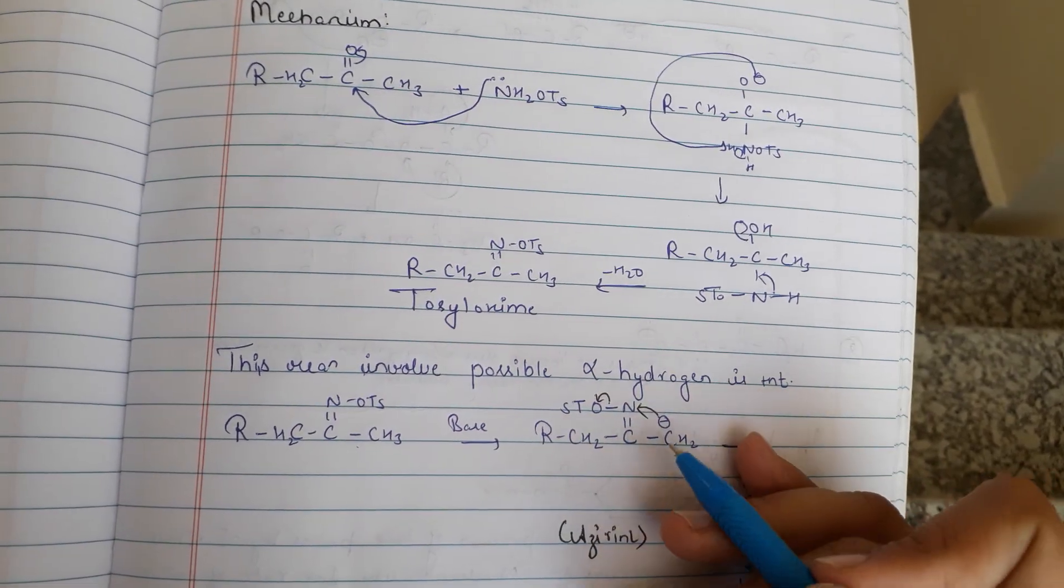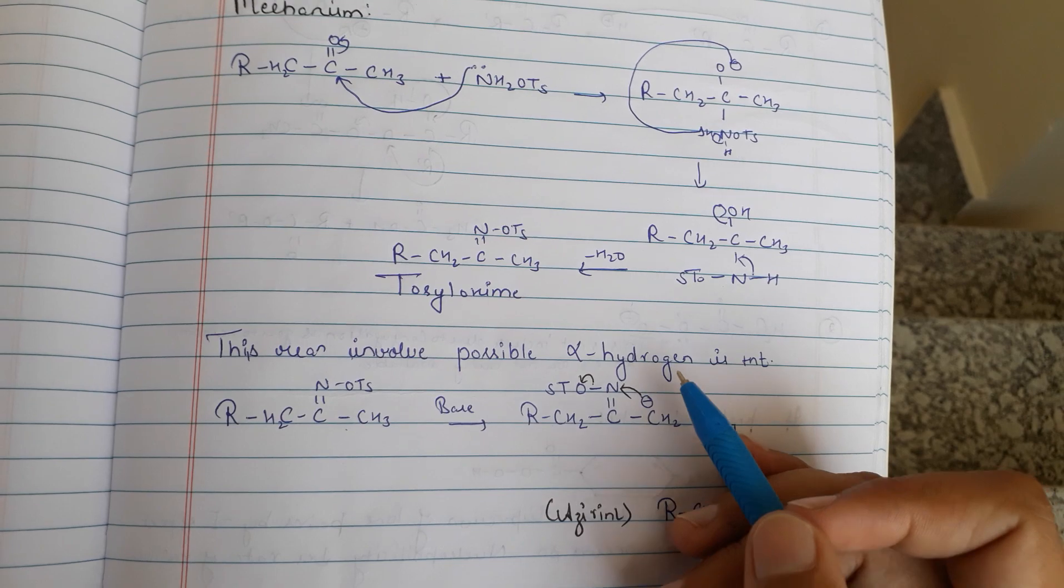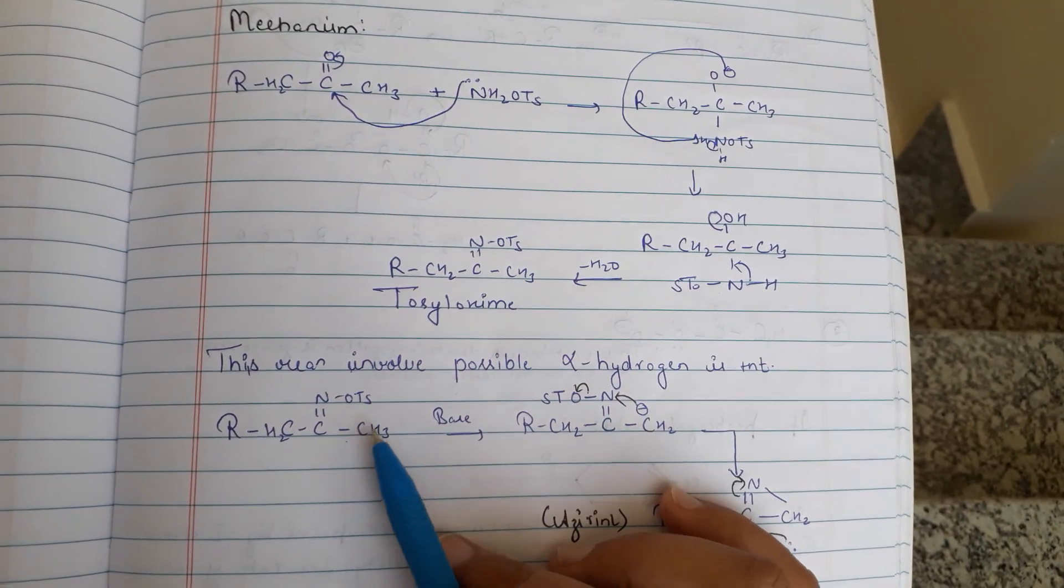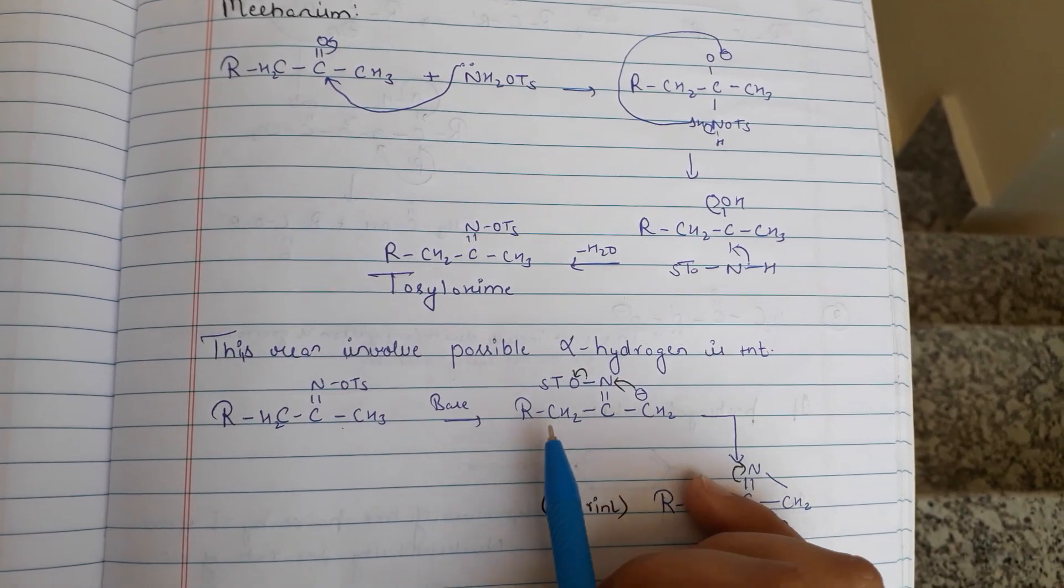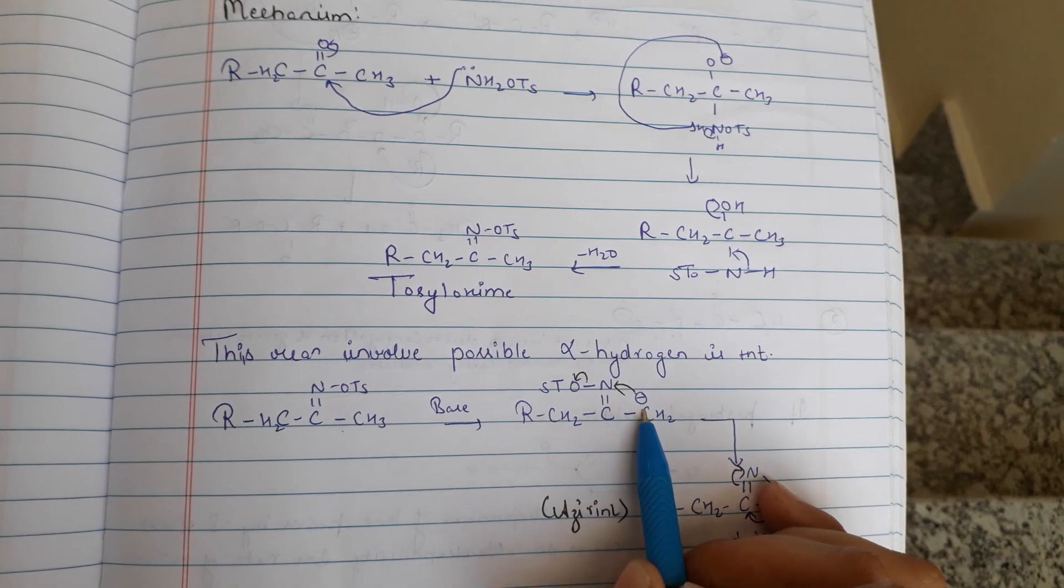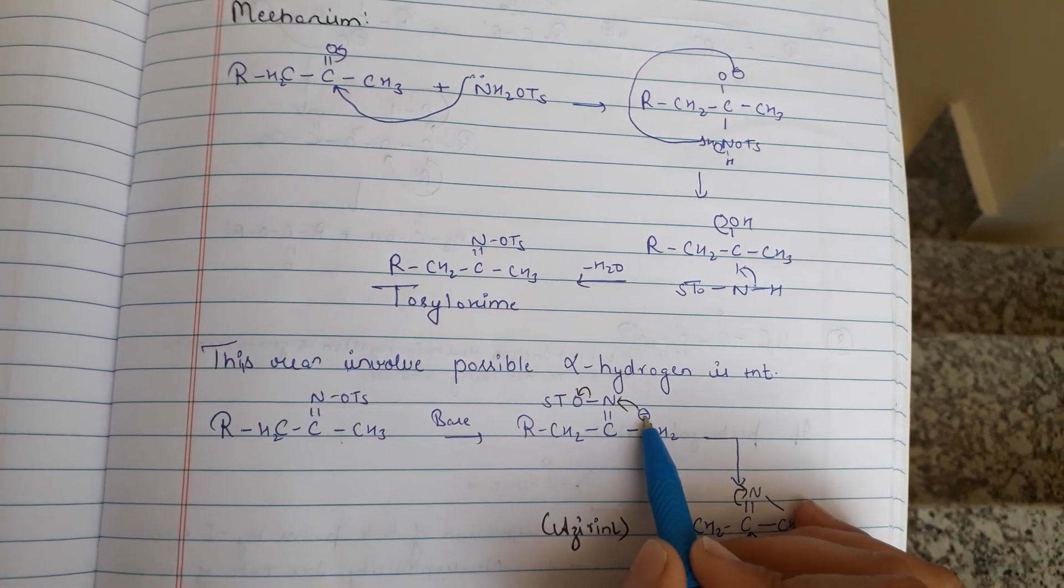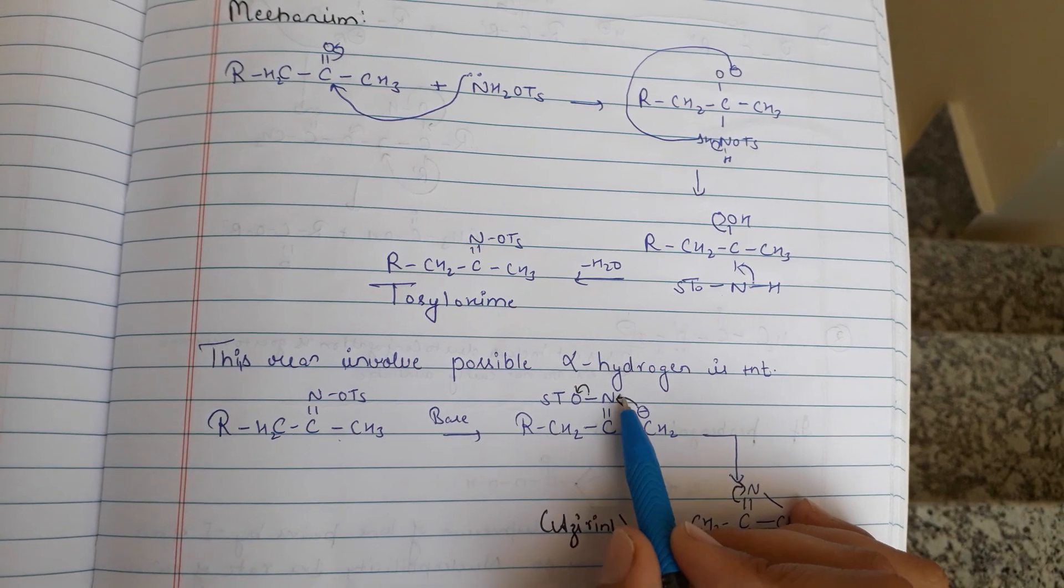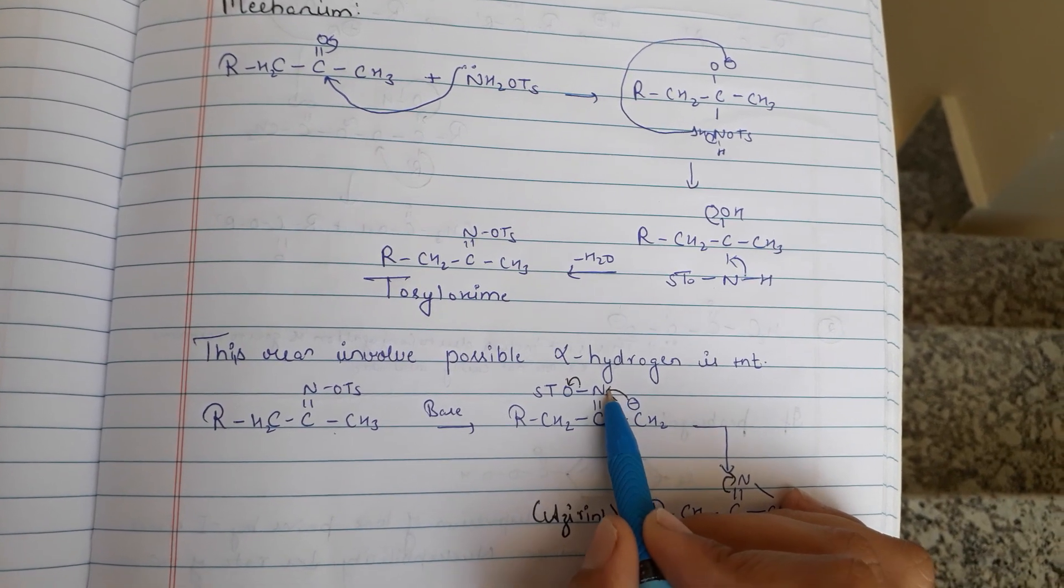Now this reaction involves a possible alpha hydrogen that is present. When base is here, then this will be a negative carbon ion and that negative shifts on that bond.